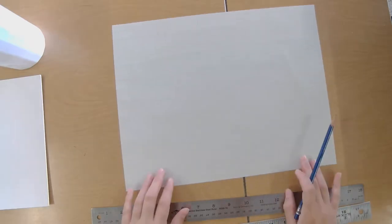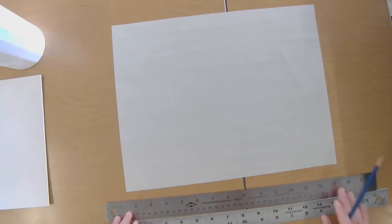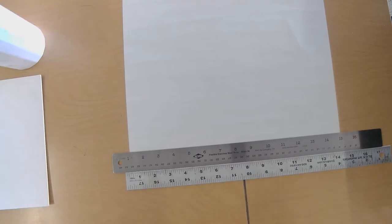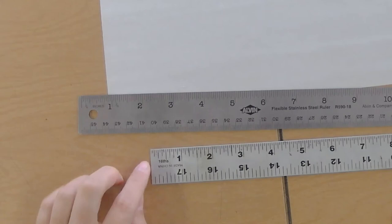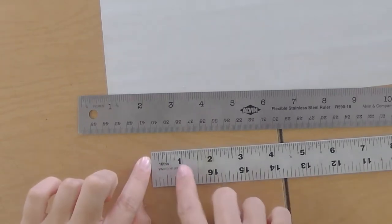So you need to have a ruler. Now you want to be careful here because some rulers, they start at zero. Let me zoom in so I can show you what I mean here. This ruler, it starts at zero and then it goes to one. We want to do a half inch.